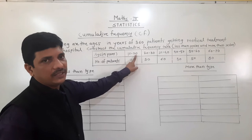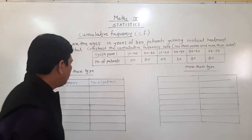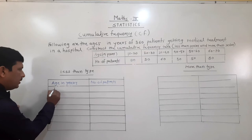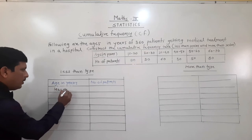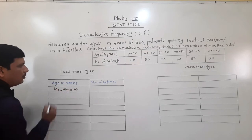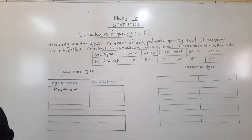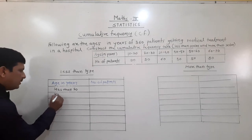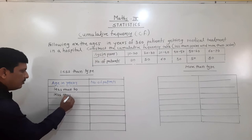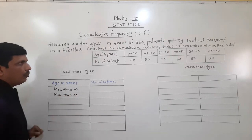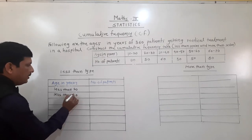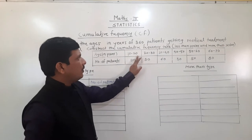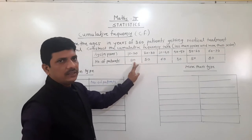So first we write less than 20. How many are there less than 20? That is 90. So less than 20 gives us 90 patients.